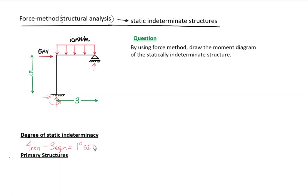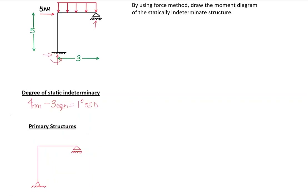This means we are going to select just one redundant force to obtain the primary structure. A quick reminder: primary structures are always isostatic, meaning they are always statically determinate. For the first primary structure, I'm going to remove the moment at this support.